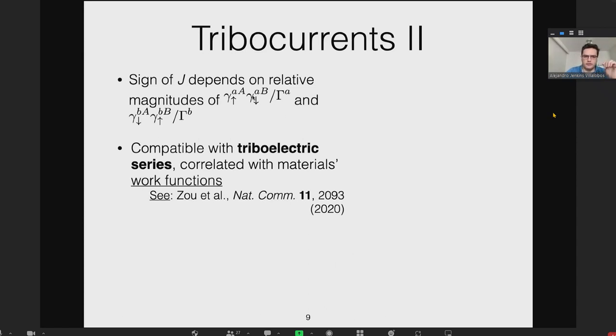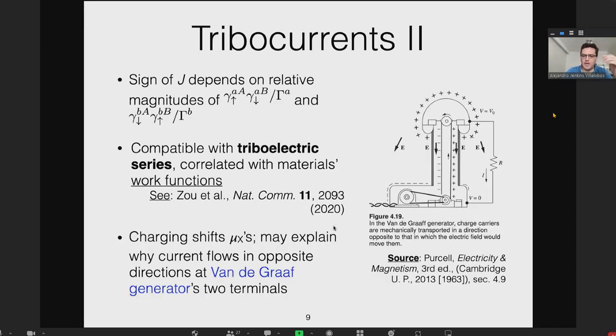The sign of the net current depends on relative magnitudes of these quantities. The strength is correlated to how much each material holds onto surface electrons. This is consistent with what has generally been seen experimentally: there is roughly a triboelectric series—not perfect, as Professor Marx talked about—but more or less a triboelectric series. When you rub one material with another, electrons go to the material with usually the higher work function. The series experimentally seems correlated with work function.